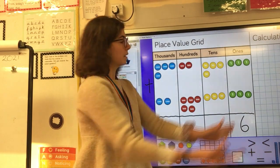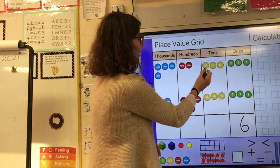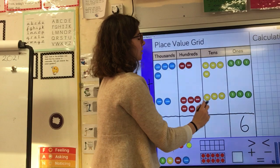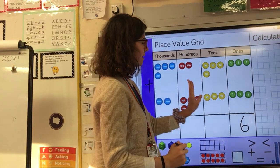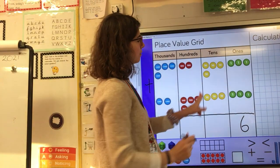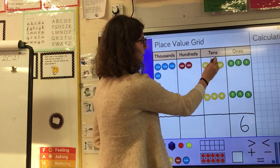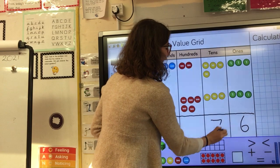Now I've done my ones I'm going to move over to look at my tens column. I need to see how many counters I've got all together adding them together. I've got four tens and three tens. So all together that will be one, two, three, four, five, six, seven tens.